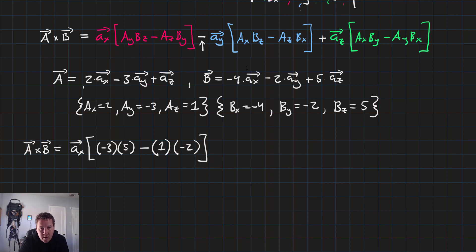Minus the unit vector a sub y times a sub x times b sub z. So that's 2 times 5 minus a sub z and b sub x 1 times negative 4.